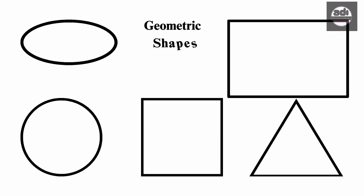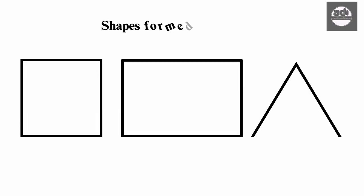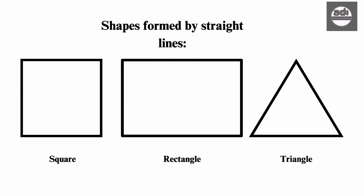There are geometric shapes and organic shapes. The basic shapes curved lines form when they join are circles and ovals or ellipses, while straight lines form polygons like squares, rectangles, and triangles.